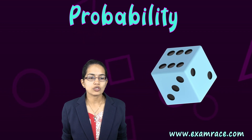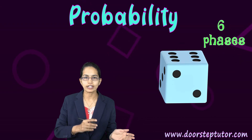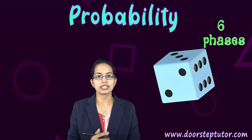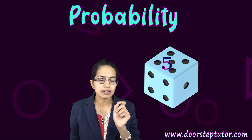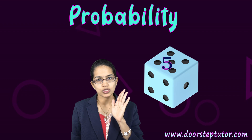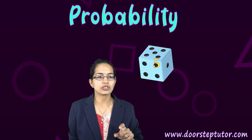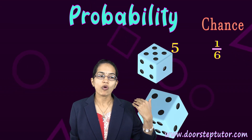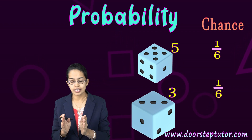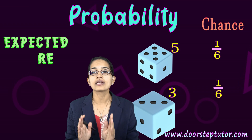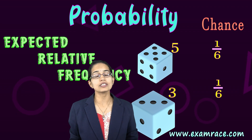The next is the case of a die. In a case of a die, you have six faces, each numbered from 1 to 6. What is the probability of getting 5 on the die? Since there are six options — 1, 2, 3, 4, 5, and 6 — and I want only 5 out of that, the chance is 1/6. If I say I want 3, the chance is again 1/6. This is the expected relative frequency of the outcome, and this is what probability is.